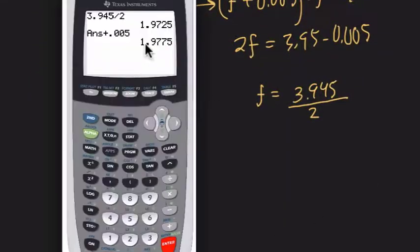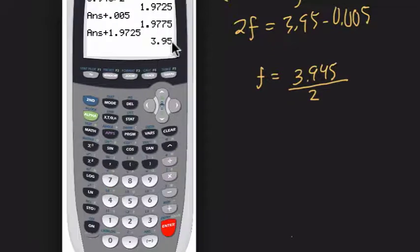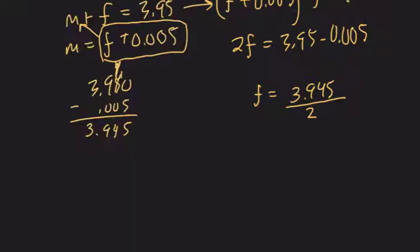Now, if we take that number and we add it to 1.9725, notice we get 3.95, the total of their salary. So if we were solving this and trying to figure out what is what, we could test to see if our work is making sense by seeing if it adds to the correct amount, which it does.